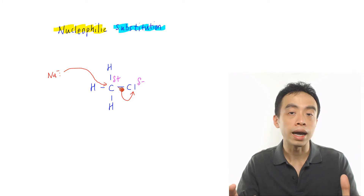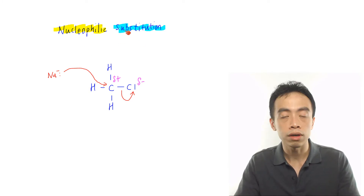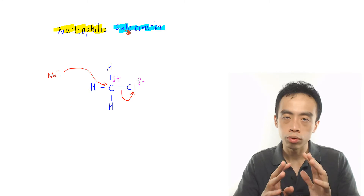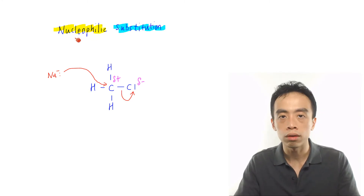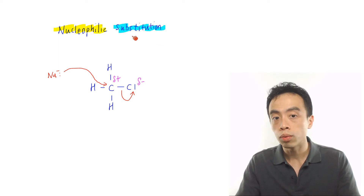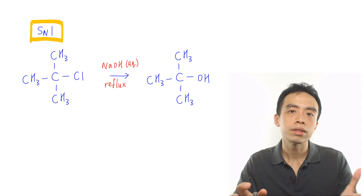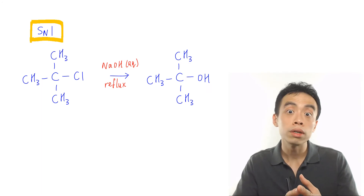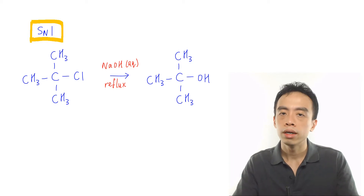Hopefully we understand how to deduce the mechanism this functional group will undergo. It's not purely based on memorizing — I can deduce whether it reacts with an electrophile, nucleophile, or free radical based on the charge of this carbon, and whether it undergoes addition or substitution based on the degree of saturation of this carbon. Interestingly, nucleophilic substitution of haloalkanes can proceed by two different pathways.